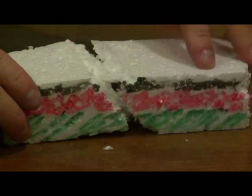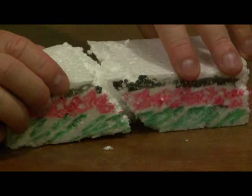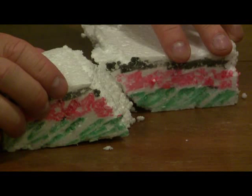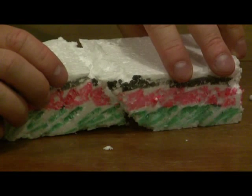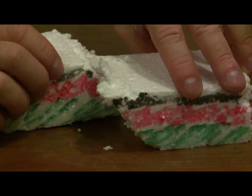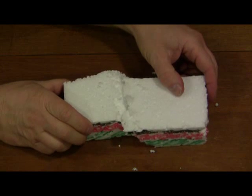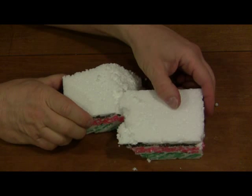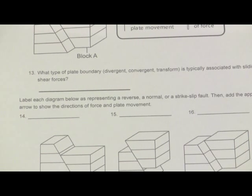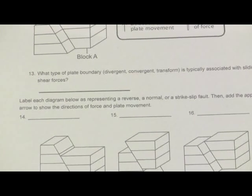Finally, you'll make a model of a strike-slip fault. Move both blocks so they slide sideways past each other. This is a strike-slip fault. Strike-slip faults are formed from sideways forces, or shear forces. The blocks respond differently when they're pushed past each other from the side. Look at this illustration and compare it with the illustrations from your first two trials. Look closely at the direction of the force and the direction in which the plates moved. Now answer the questions in the student guide.